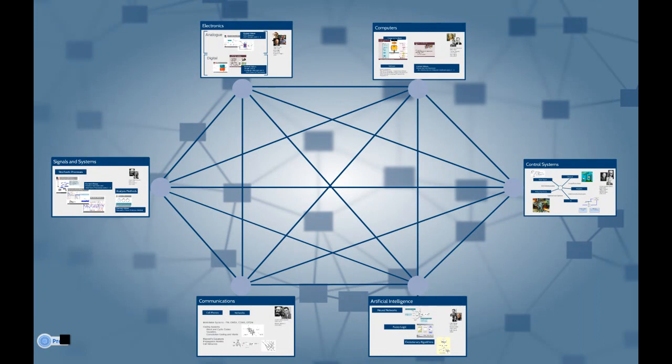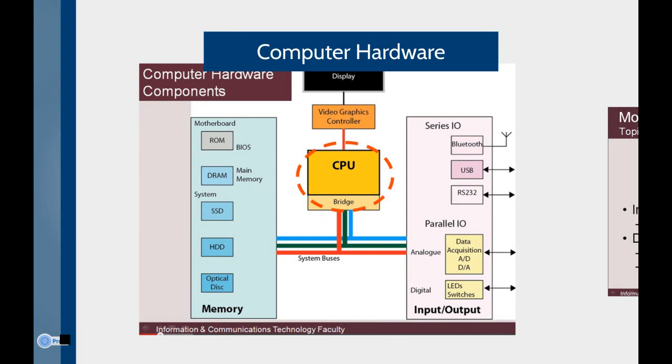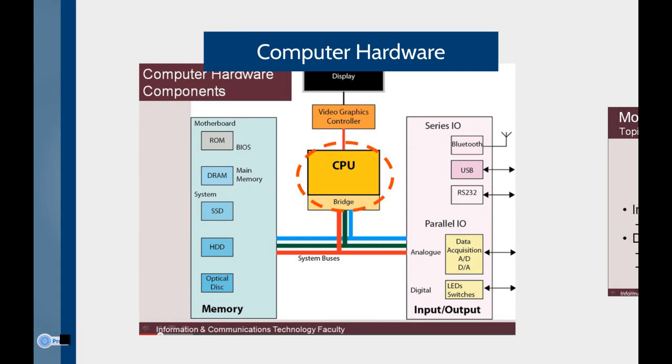The content so far is mostly engineering stuff, ranging from computer hardware through to electronics, signal processing and robotics. The format ranges from general background material, such as the introduction to computer hardware, through to specific how-to tutorial problem examples, such as those on transistor circuits.